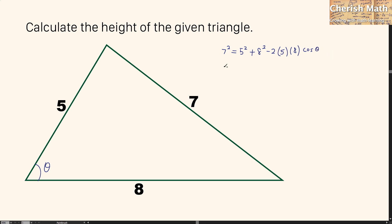I am now rearranging the equation by making cos theta the subject. Cos theta equals 5 squared plus 8 squared minus 7 squared divided by 2 times 5 times 8.